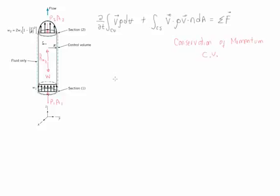So let's start with section 1. For section 1 we have W1 m1 and we said that W1 is going upwards in the positive z direction therefore it's going to be positive, and m1 is going into the control volume therefore it's going to be negative.